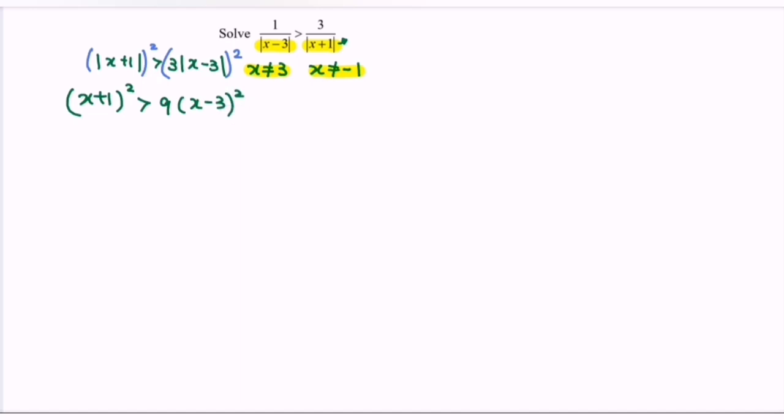Next is to expand where we have x²+2x+1 greater than 9 multiply with x²-6x+9. So kindly expand, we have 9x²-54x+81.